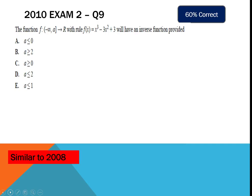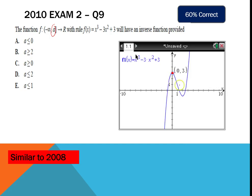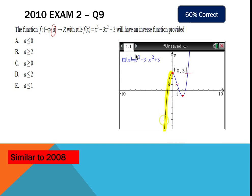This inverse function question asks for the value of a for which the inverse exists — again looking for where the function is one-to-one. Draw the graph, find the key points using your calculator. Starting from negative infinity, the yellow section of the graph up to the local maximum at (0, 3) is one-to-one — that is, negative infinity up to zero — so the answer is A.